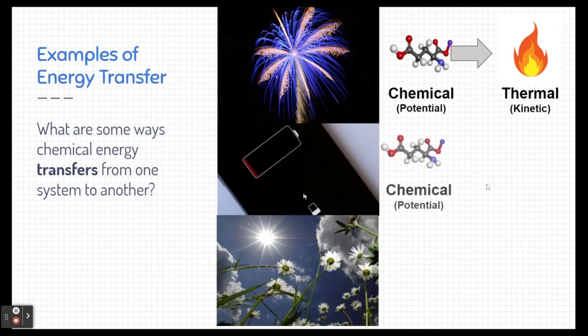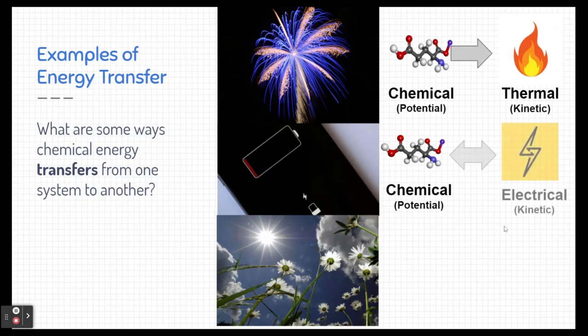Another example is a battery, typically like a battery inside a phone. Now the battery is storing energy in the form of chemical potential energy that's stored in the chemicals inside the battery. Now when we actually use our phone, that chemical energy gets transferred to electrical energy in the form of moving electrons that allow our phone to work.